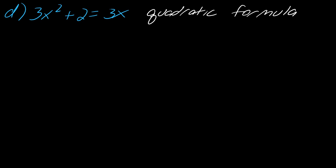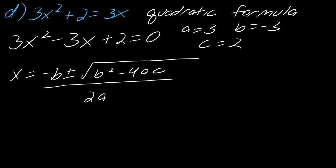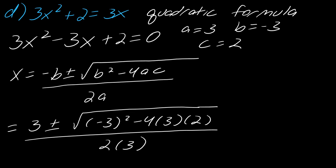For this last one we have to use the quadratic formula. Remember, you can't use it unless all your terms are on the same side, so I begin by subtracting 3x over. Then we can begin the quadratic formula. I've got my A, my B, and my C — it's a really good idea to write those out clearly so your teacher knows exactly where your head was when you plugged everything in. Plugging into the quadratic formula, this becomes 3 plus or minus the square root of negative 3 squared minus 4 times 3 times 2, all over 2 times 3.